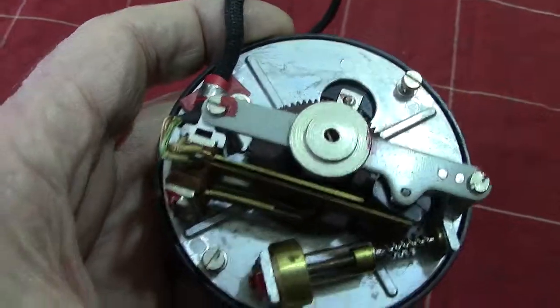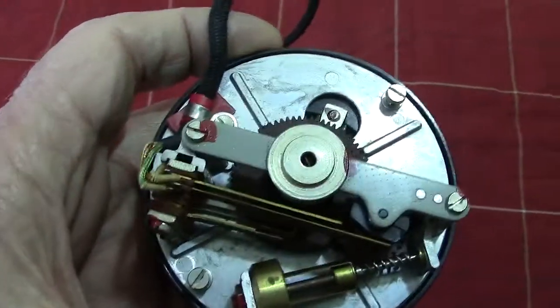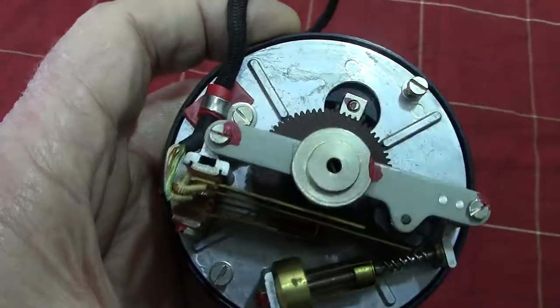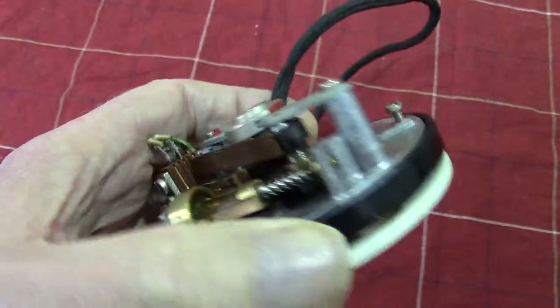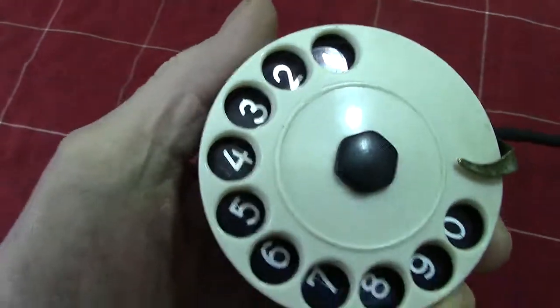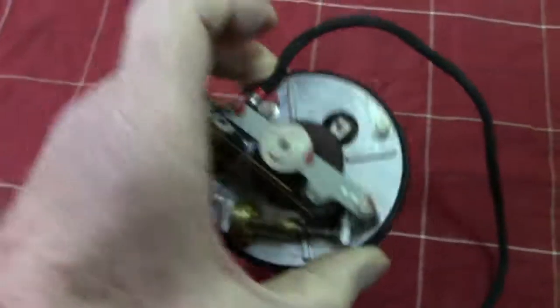Two screws hold it in. Seems to be quite a common way of holding dials in by continental phone makers. Anyway, it's only going to be a short video, just to show the dial.